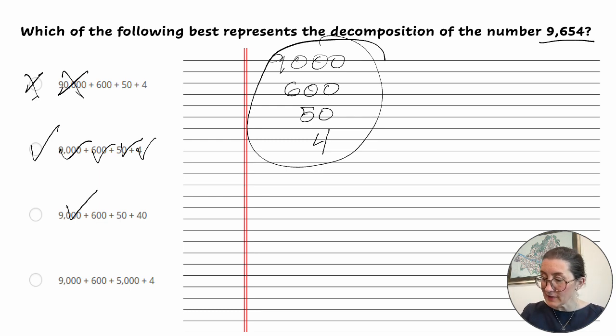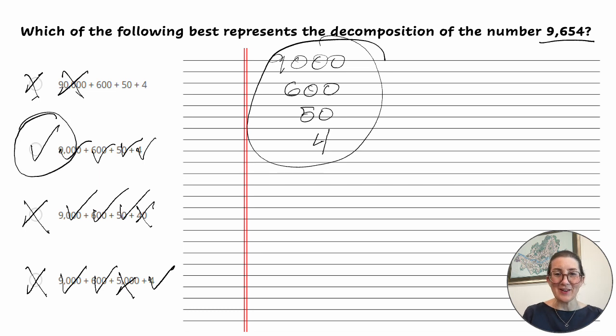9,000 is correct, 600 is correct, 50 is correct, but it's 40. So that's tens, not ones, so that is incorrect. And lastly, 9,000 is correct, 600 is correct, 5,000 is thousands, not tens, so it is not correct. And 4 is the ones, so it is correct, but overall it's not. So this is our answer.